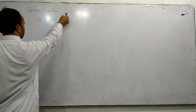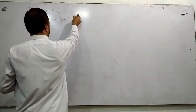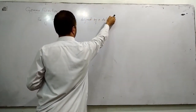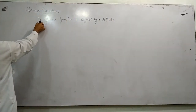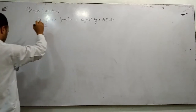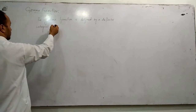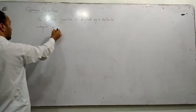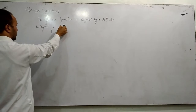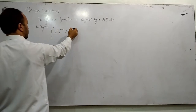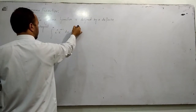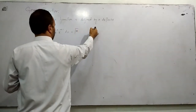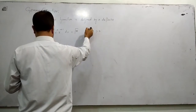The gamma function is defined by a definite integral: the integral from 0 to infinity of e to the power minus x, times x to the power n minus 1, dx. This is usually represented as gamma(n), where n is greater than 0.